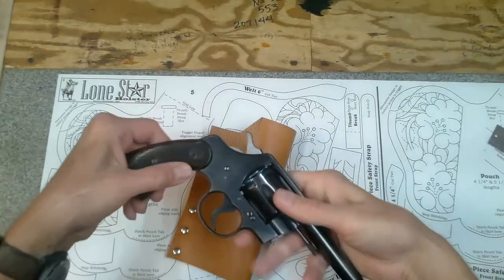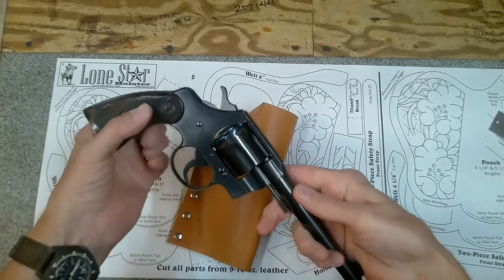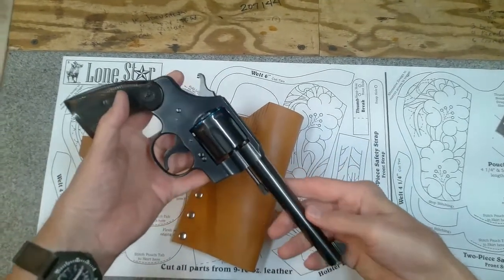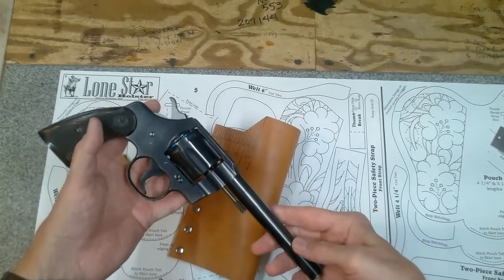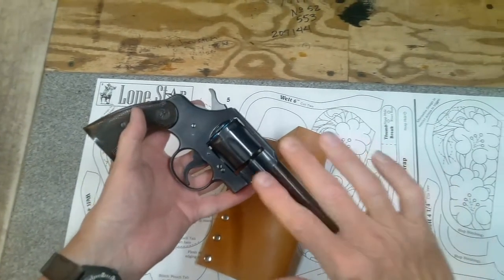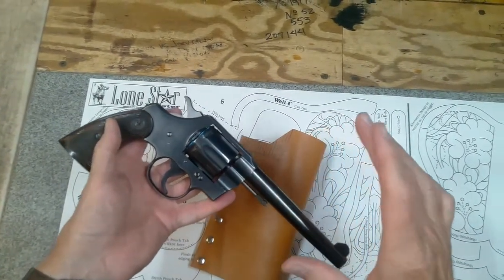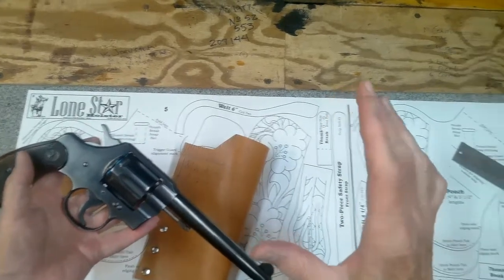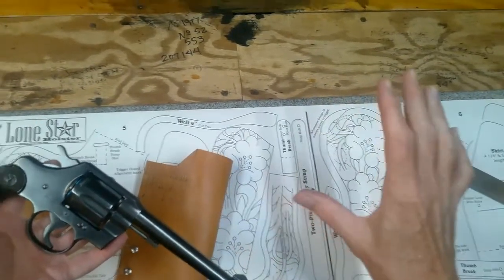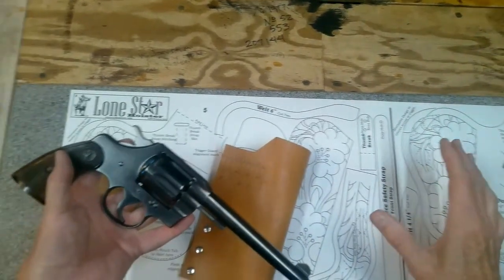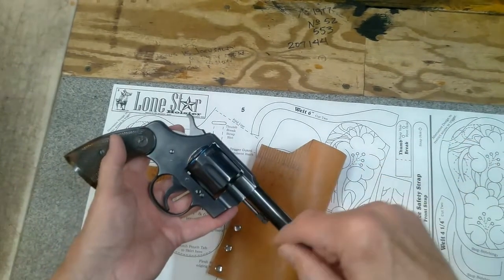While I know the pattern number five fits the Colt Official Police, I'll show how the holster and welt gauges are used to determine which pattern would best fit any specific weapon. Patterns and instructions for making the holster and welt gauges are included in the Lone Star Holster pattern pack.